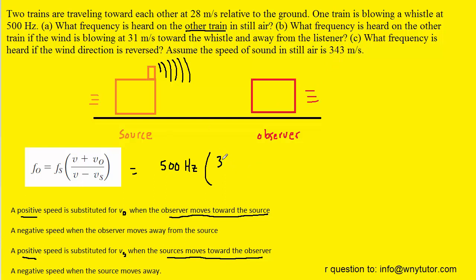V is the speed of sound which is given to us as 343 meters per second. The speed of the observer is going to be 28 meters per second. We're going to use a positive 28. We'll plug in the speed of sound again. Then we have minus the speed of the source which is also moving at 28 meters per second.